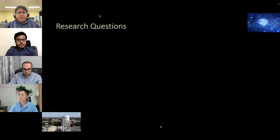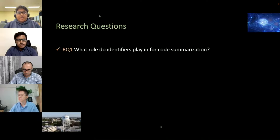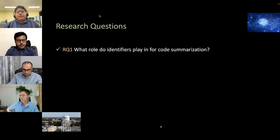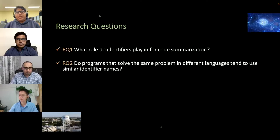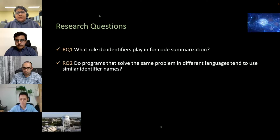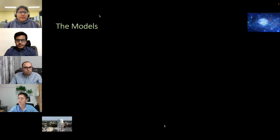We investigated the potential of multilingual fine-tuning in software engineering tasks, trying this on three tasks: code summarization, code retrieval or code search from natural language description, and method name prediction. For all three tasks we use the CodeSearchNet dataset, which is multilingual with data from six languages: Ruby, JavaScript, Java, Python, PHP, and Go. We have two research questions: first, what role do identifiers play in code summarization tasks — we observed that abstracting out identifiers causes performance to drop significantly, while abstracting keywords, operators, and separators does not. Second, whether programs solving the same problem in different languages tend to use similar identifiers.